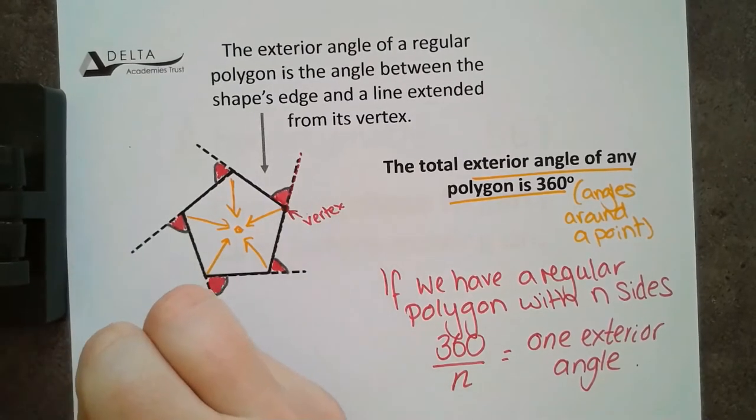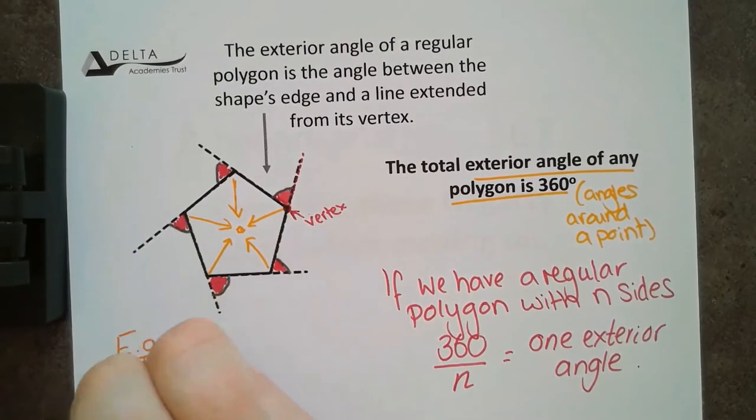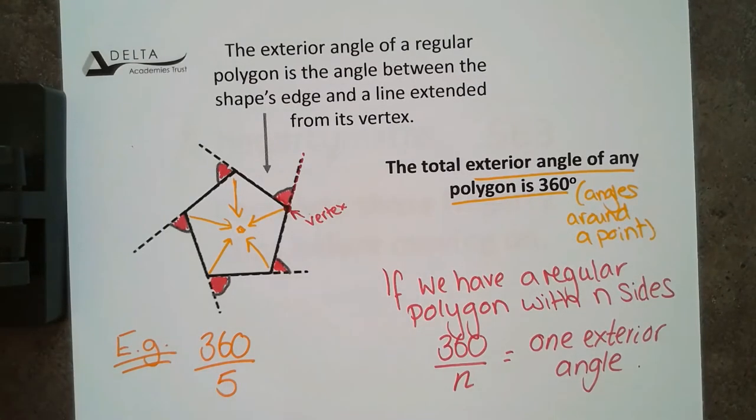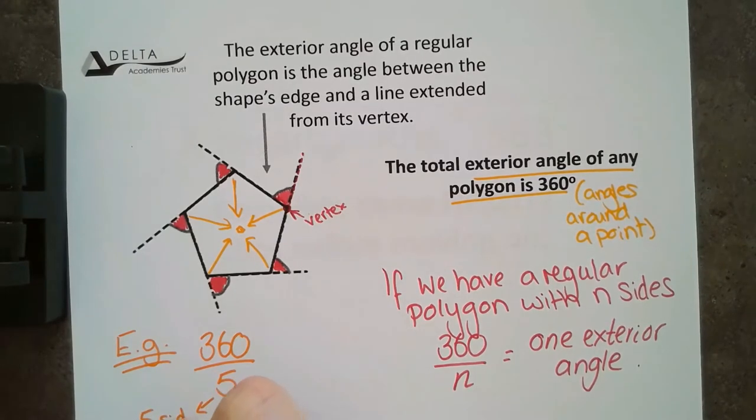That means we could look at this pentagon and figure out the size of these exterior angles here by doing 360 divided by 5. Because N is the number of sides, this is the 5 sides of the shape. So, N equals 5.